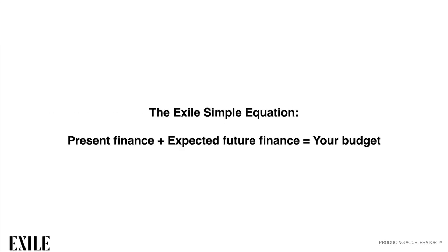This is a really simple equation that cuts through all the noise about film financing. It's available in the download section: your present finance plus your expected future finance equals your budget. It's that simple. Work out how much money you have today, how much you believe you can raise, and that's your budget. Then you need to go out and raise that money.